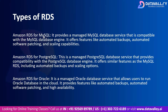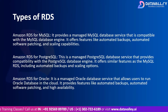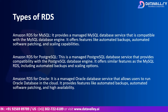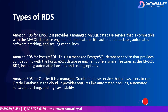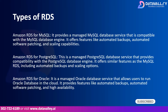Amazon RDS for MySQL provides a managed MySQL database service compatible with the MySQL engine. It offers features like automated backups, automated software patching, and scaling capabilities. Amazon RDS for PostgreSQL is a managed PostgreSQL database service that provides compatibility with PostgreSQL and offers similar features including automated backups and scaling. Amazon RDS for Oracle is a managed Oracle database service that allows users to run Oracle databases in the cloud, with features like automated backups, software patching, and high availability.